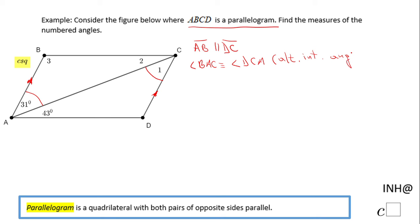So this is the justification for my answer. And now I'm going to write the measure of angle BAC is equal to the measure of angle DCA. And as you see on the picture, BAC is nothing else than the angle that is 31 degrees.